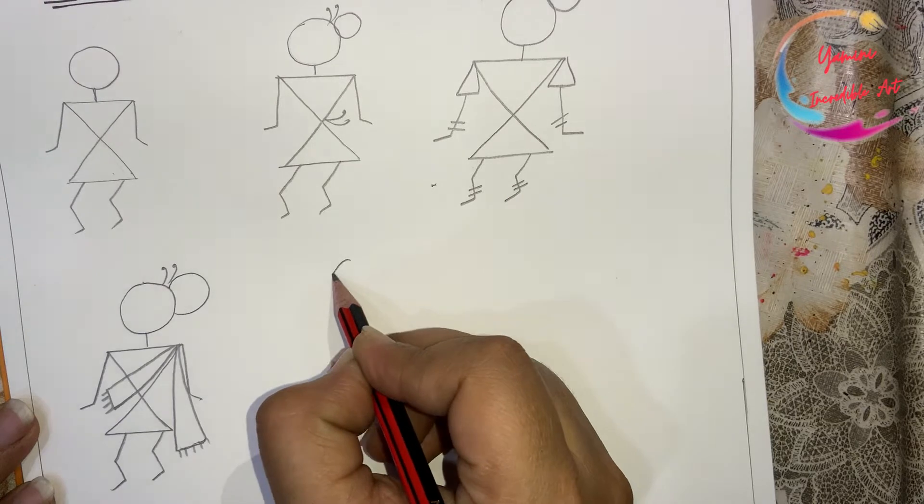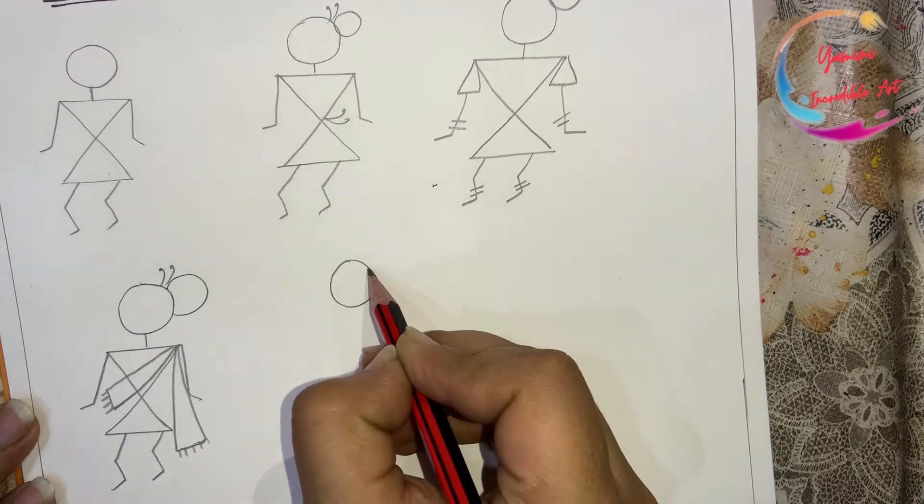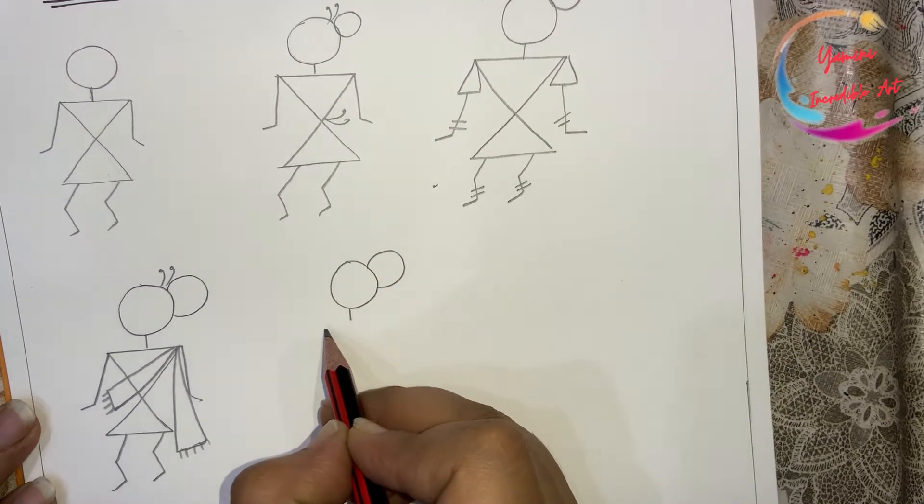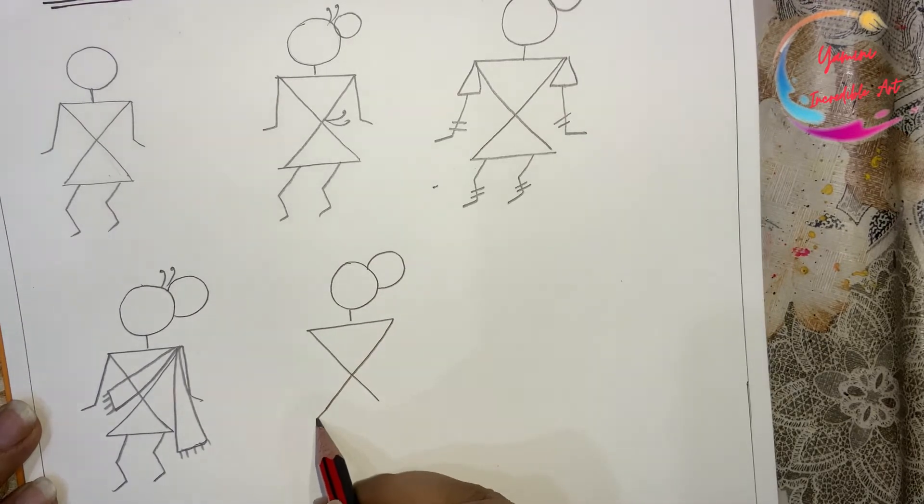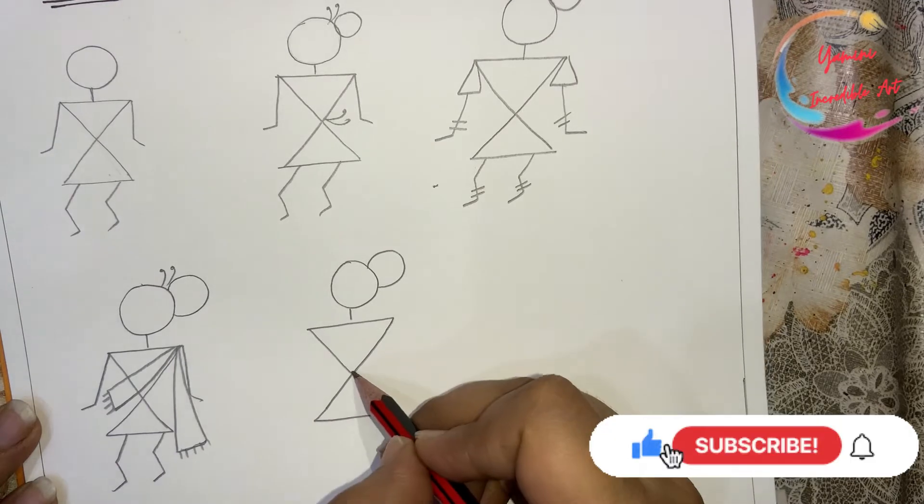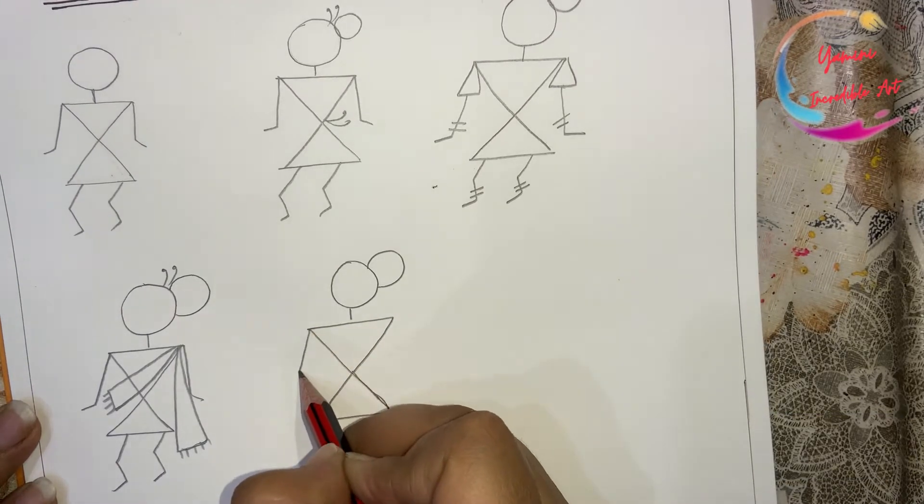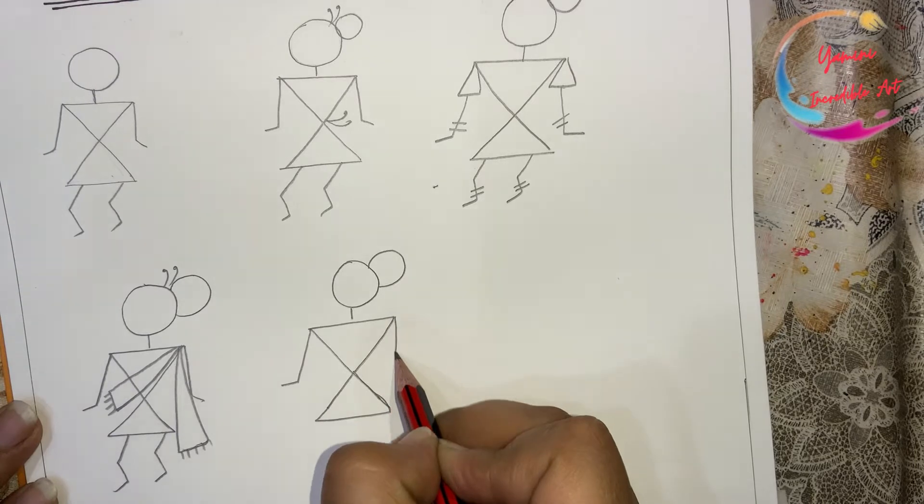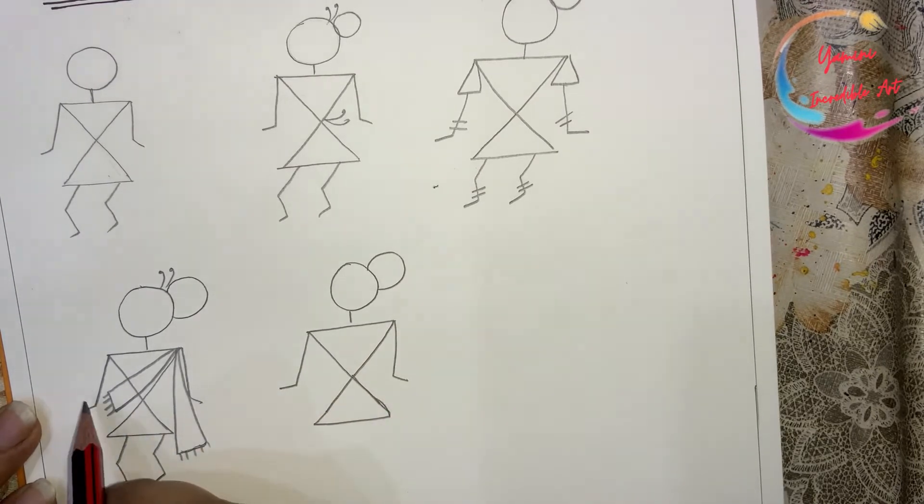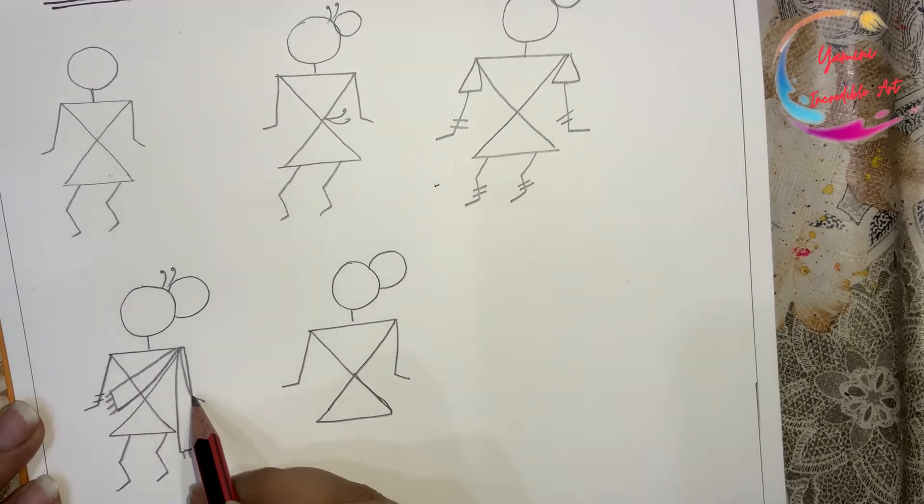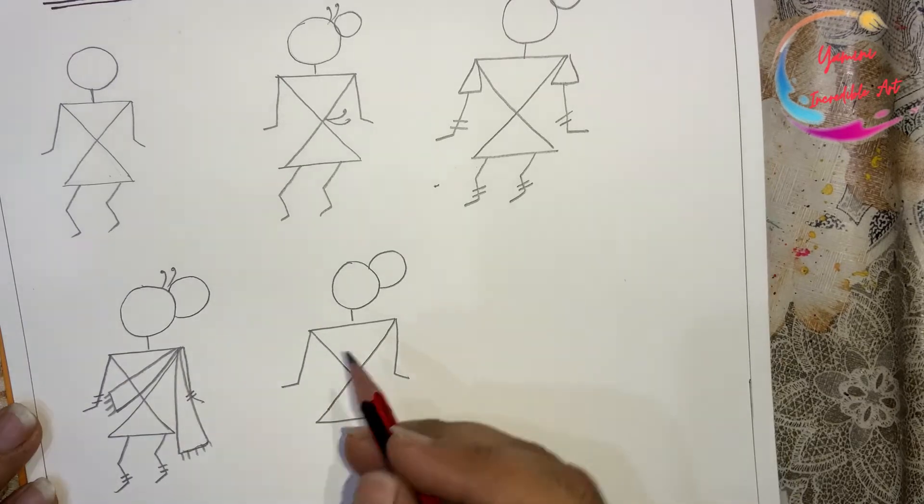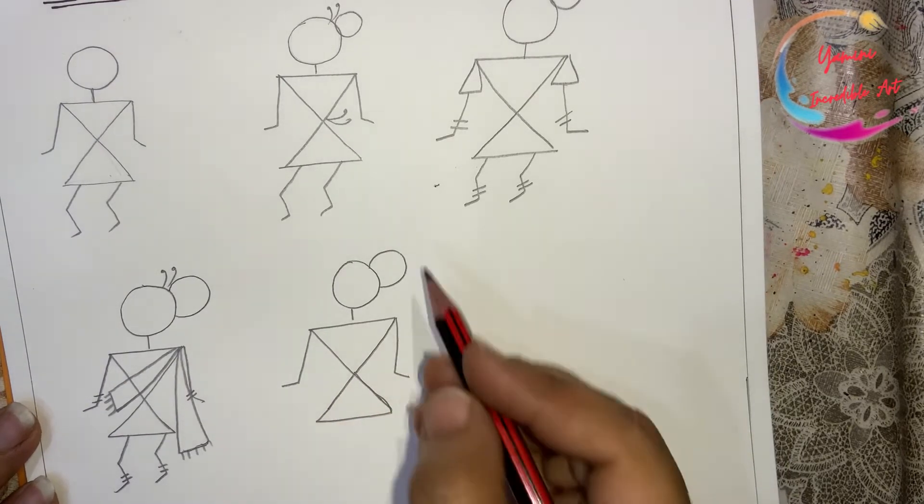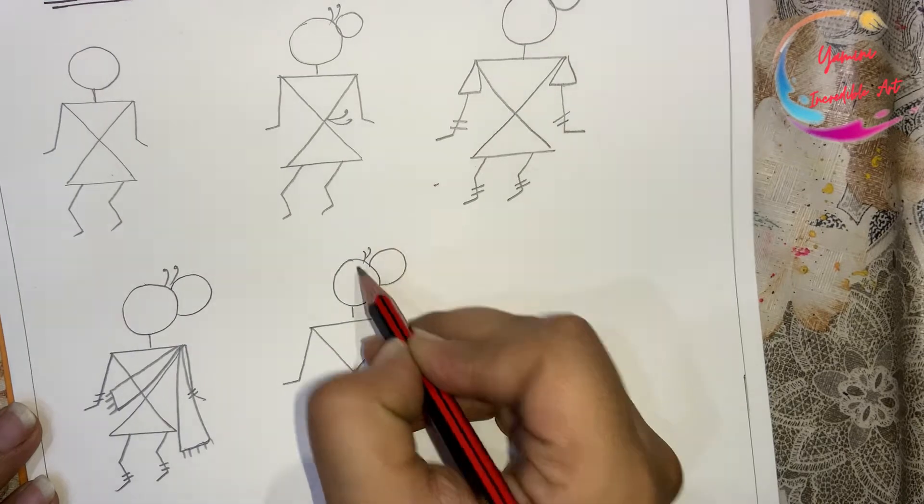Now one more woman like this, small neck, two triangles, hands. I forgot here bangles. Because it's an Indian woman who has taken a dupatta, it looks good with anklets and bangles. Here I am going to add another way of dupatta like this.